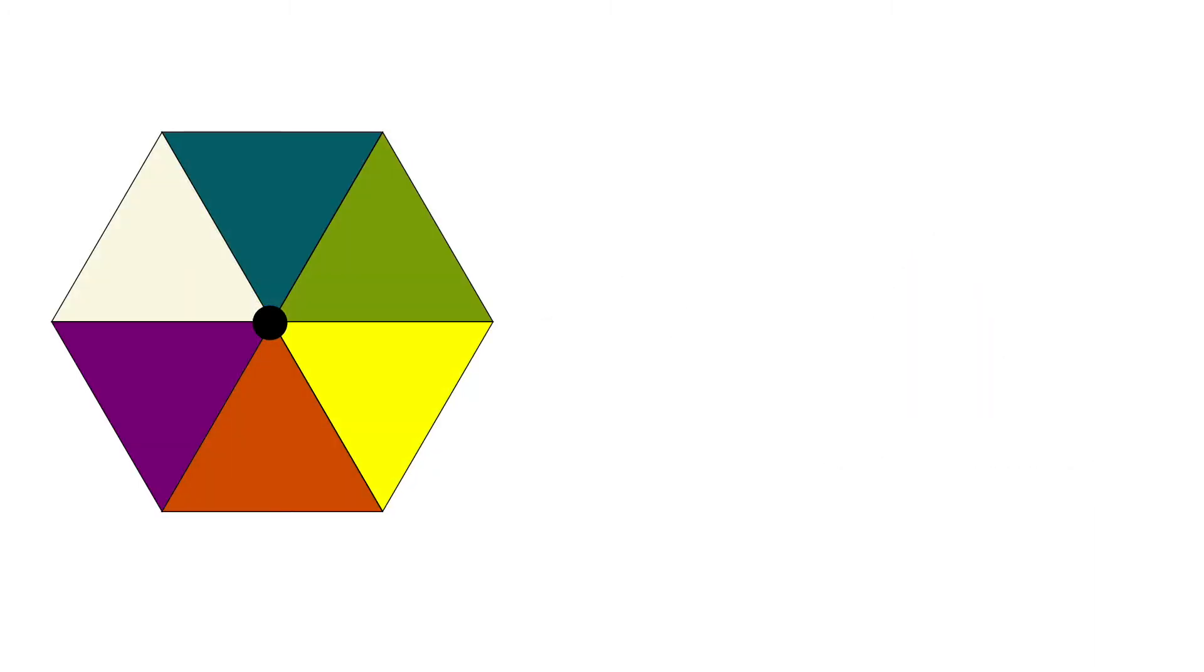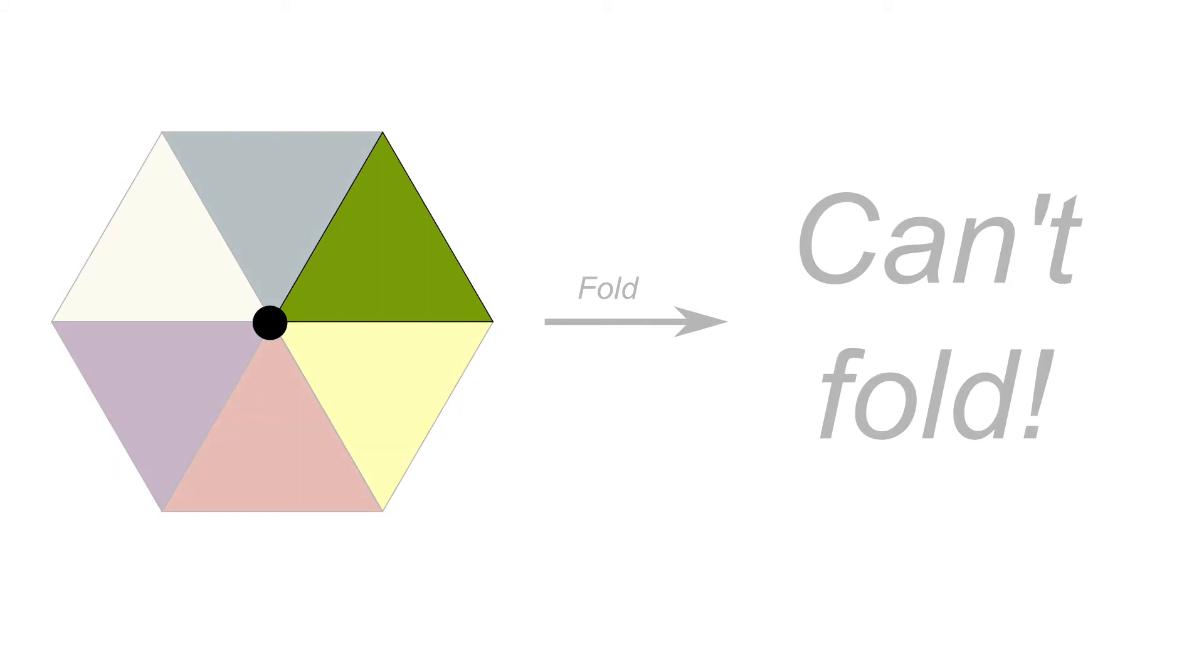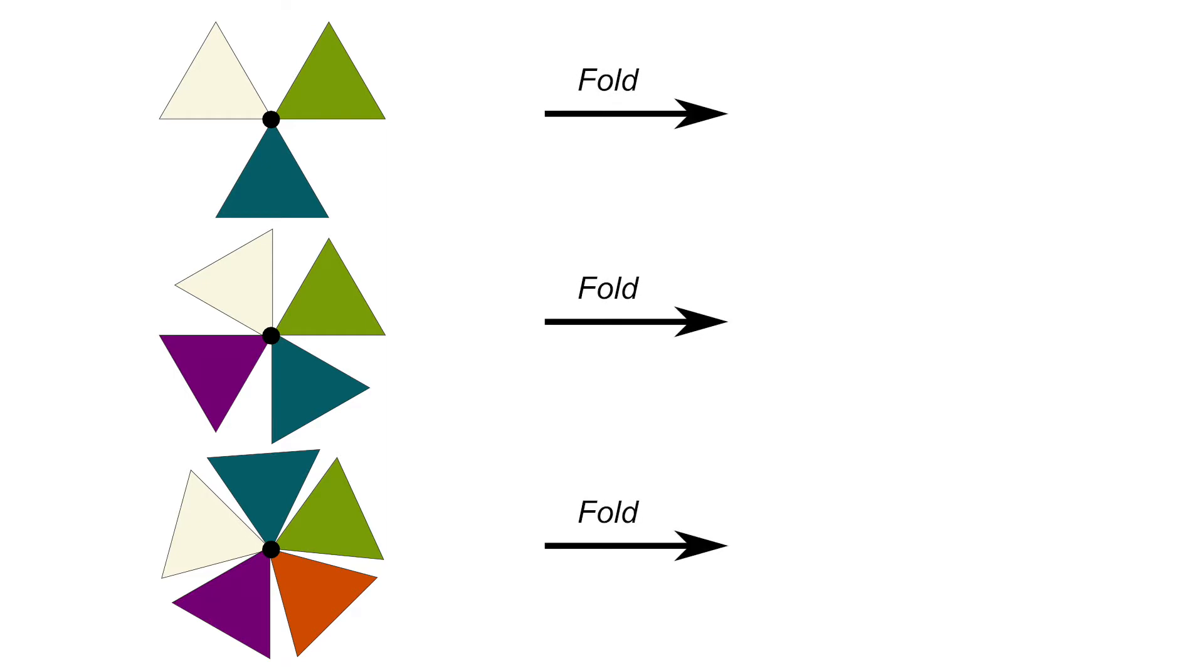But in addition, the angles of the faces at a corner cannot add up to 360 degrees or more, as otherwise the faces would be bending away and wouldn't be able to make up a volume. Now, if you choose your faces to be triangles, this means that at each corner you can have either 3, 4, or 5 faces, which corresponds to respectively the tetrahedron, the octahedron, and the icosahedron.